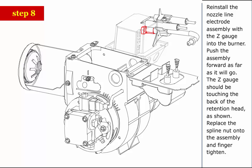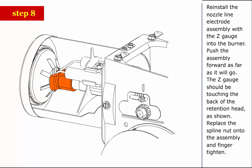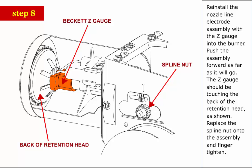Step 8: Reinstall the nozzle line electrode assembly with the Z gauge into the burner. Push the assembly forward as far as it will go. The Z gauge should be touching the back of the retention head as shown. Replace the spline nut onto the assembly and finger tighten.